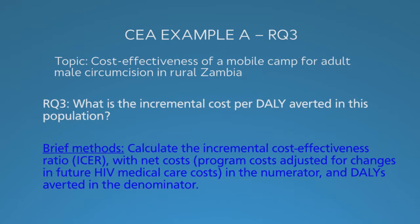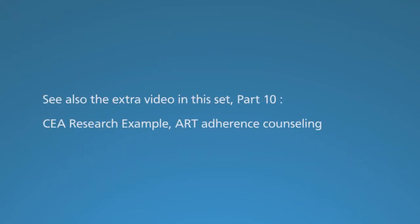The third research question asks what is the incremental cost per DALY averted — this is the incremental cost-effectiveness ratio. The numerator is net costs: program costs adjusted for reductions in medical costs due to averted HIV infections. The denominator is DALYs averted. The cost-effectiveness ratio is the most complicated outcome conceptually, since it's a ratio of two simpler outcomes, but it's easy to calculate once you know the net costs and health effects. This question will also include the sensitivity analysis. In the next segment we translate the cost-effectiveness analysis topic into a decision tree that guides the analysis.